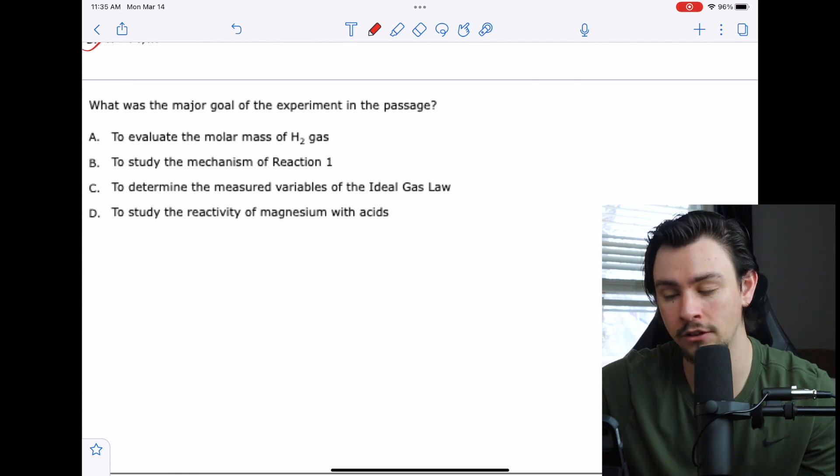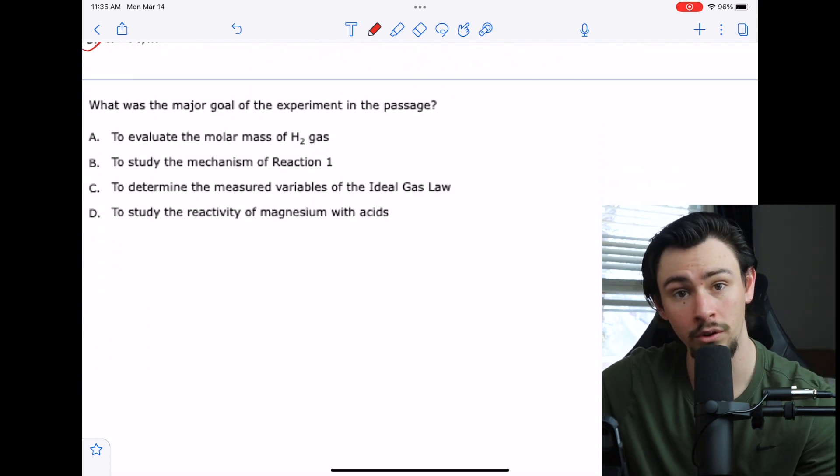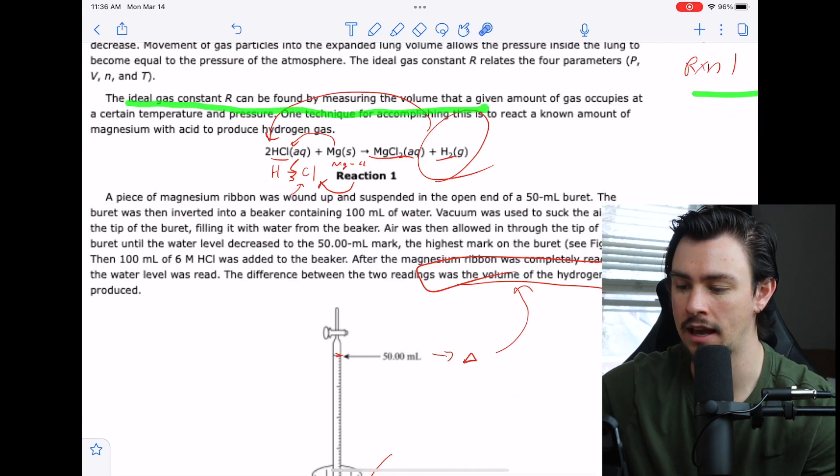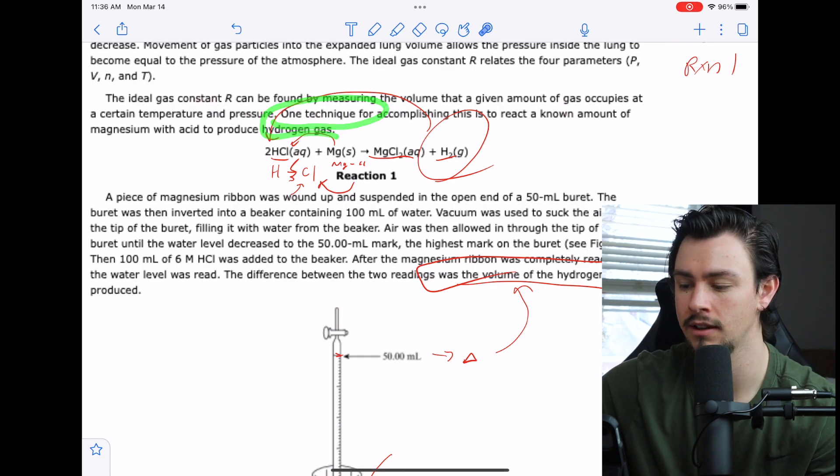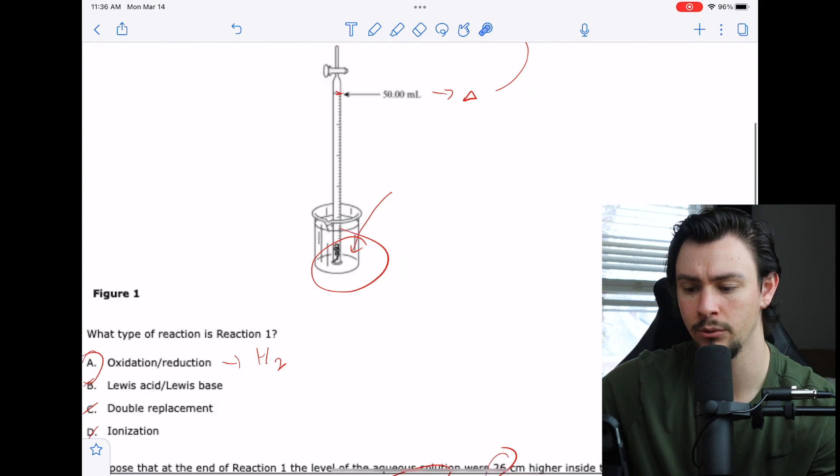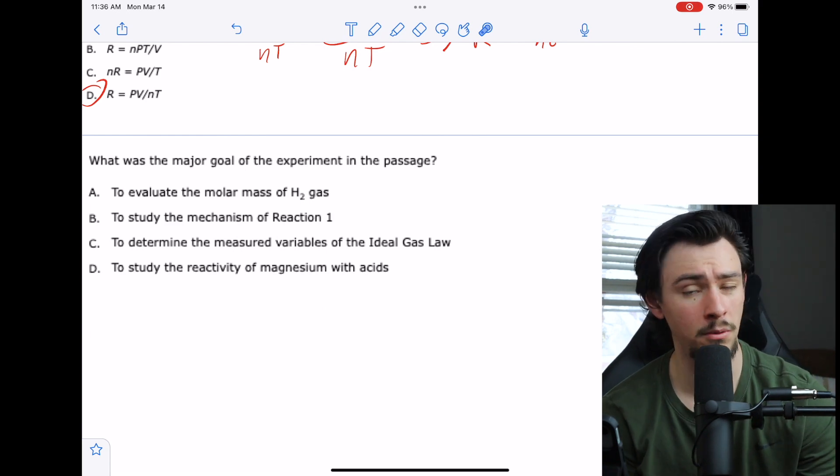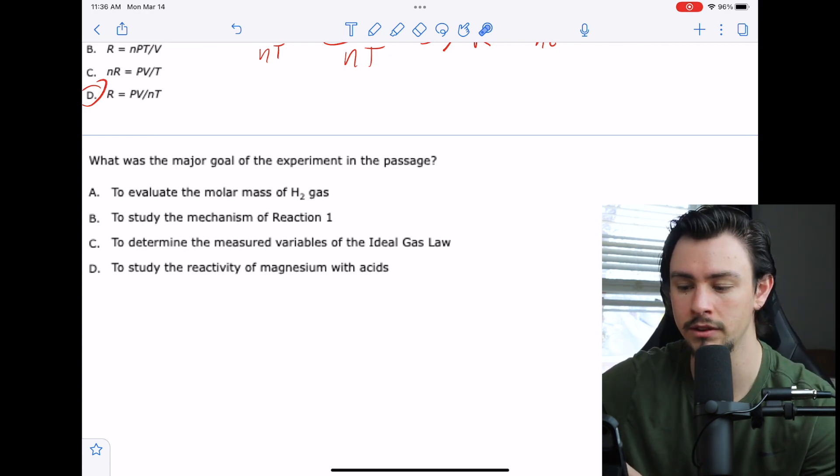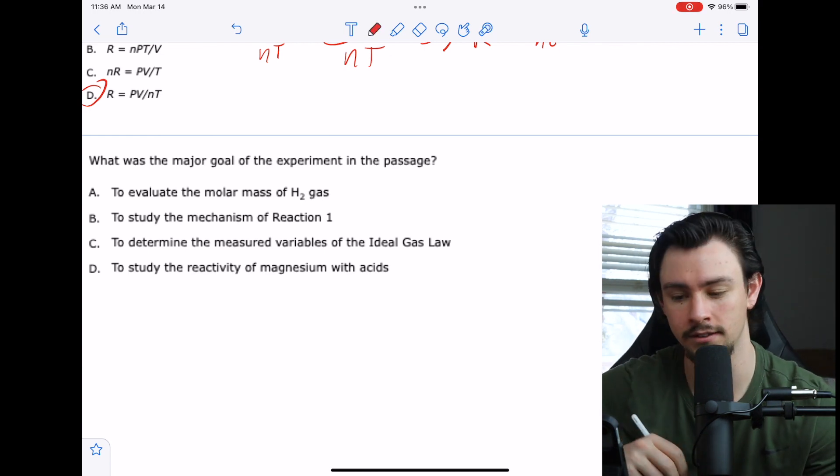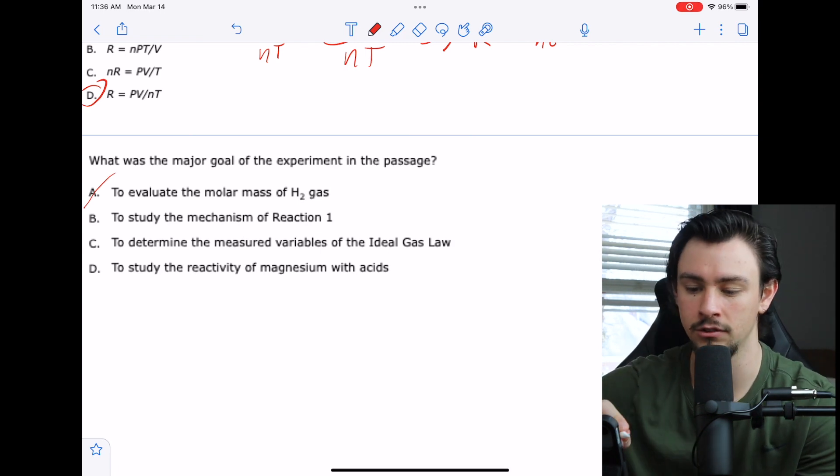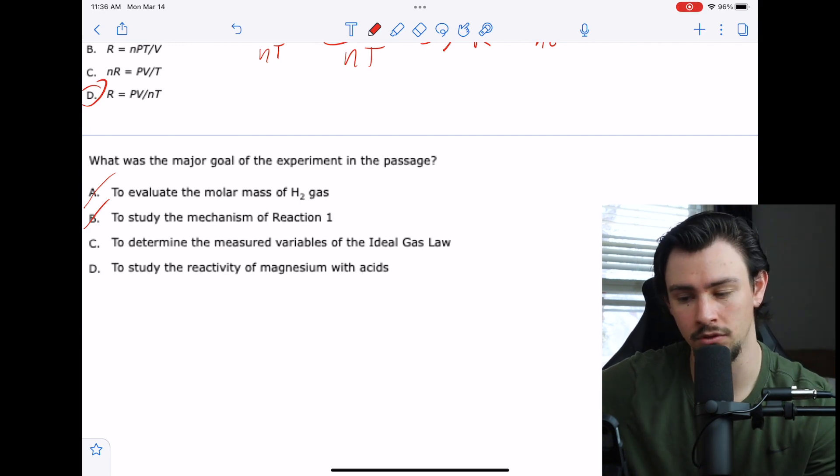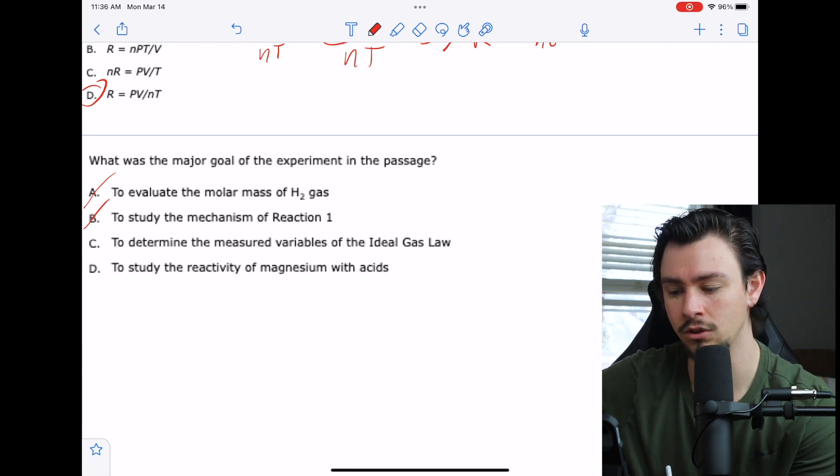And the last one says, what was the major goal of the experiment in the passage? They actually told us this, right? And we kind of alluded to it in our flow chart. We said that we can find this ideal gas constant using this technique, using the technique of reaction one. So whenever we get asked, what's the major goal of the experiment? The whole experiment was reaction one. So it has something to do with finding or measuring the ideal gas constant. A says to evaluate the molar mass of H2 gas. Nope, that's a periodic table. B says to study the mechanism of reaction one. Nope, it's a very well known reaction. And we didn't even look at the organic chemistry of it or even the inorganic chemistry of it. So maybe not B.